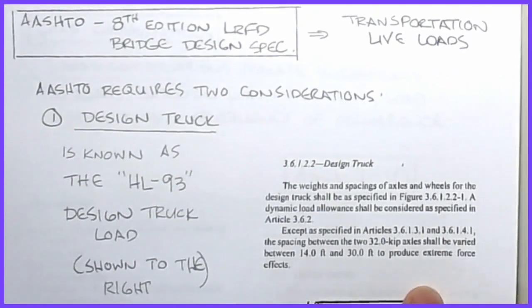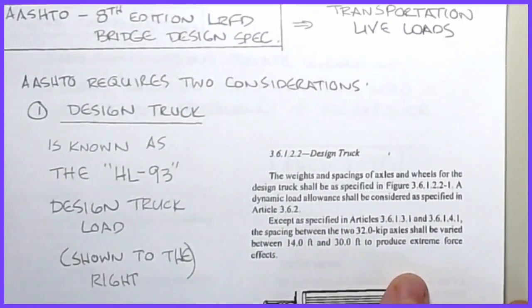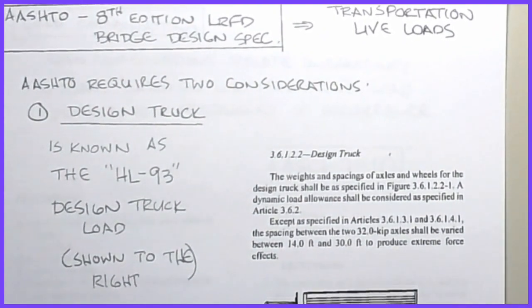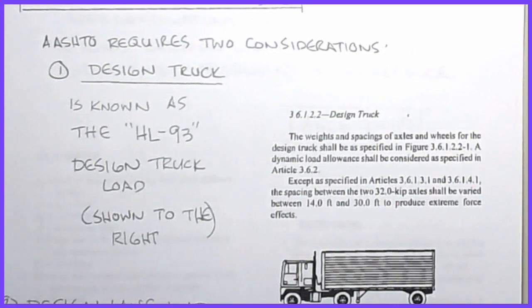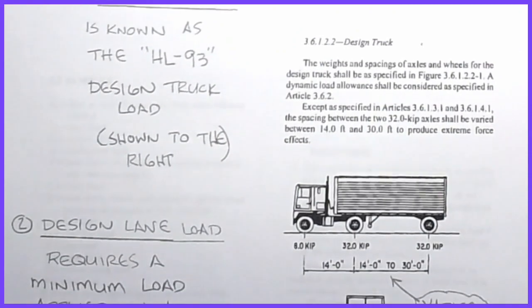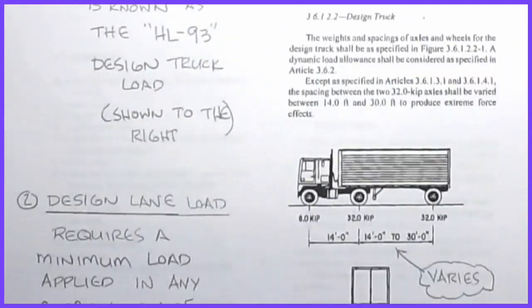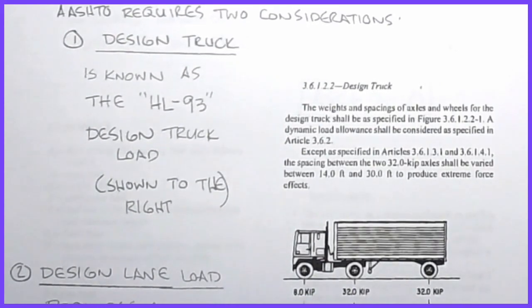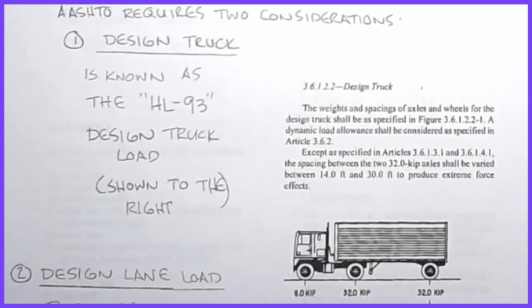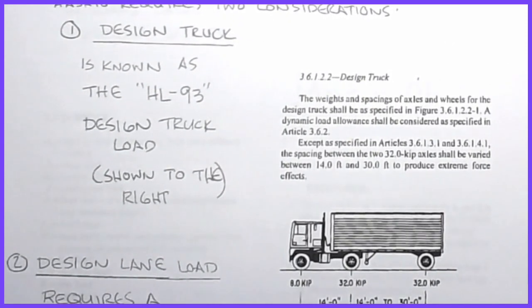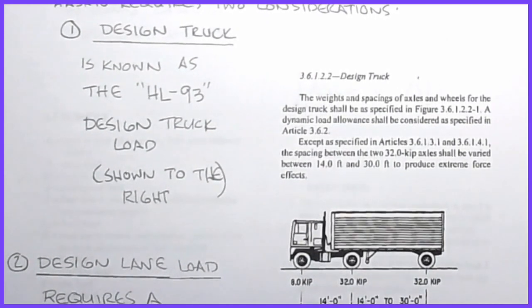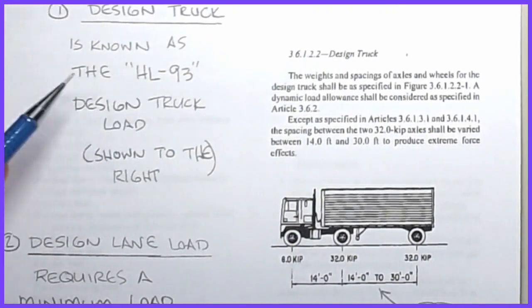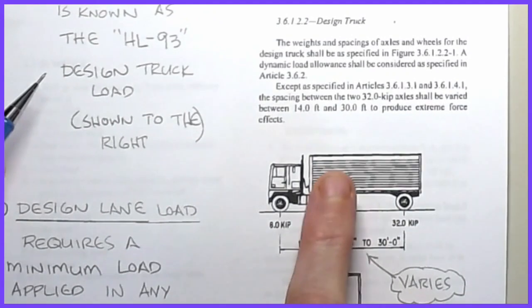The other category of live loads is the AASHTO requirements for transportation live loads, which are treated a bit differently but have some similarities to the IBC approach. AASHTO requires two design considerations for bridge design: the design truck load and the design lane load. The governing truck load is the HL-93 design truck, based on the AASHTO 8th Edition LRFD Bridge Design Specification.